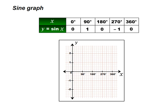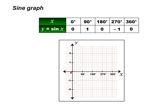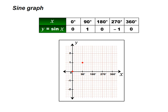Look at the table again. Look at 0 degrees and y is equal to 0 — let us put a dot where 0 degrees and 0 meet. They meet here. Let us put a dot where 90 degrees and 1 meet — they meet here. Let us do the same for 180 degrees, 270 degrees, and 360 degrees. As you plot more and more points, you can see that the graph is curved.